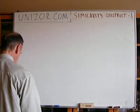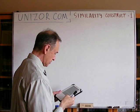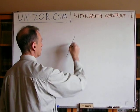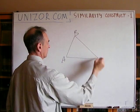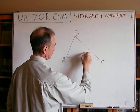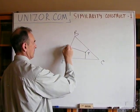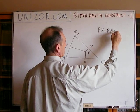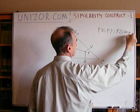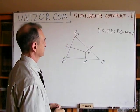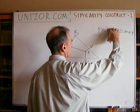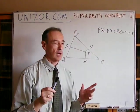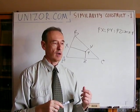Next problem: find a point inside a given triangle such that its distances from the three sides of the triangle have a given ratio. So you need to find a point inside the triangle such that, if you draw perpendiculars to all three sides, those perpendiculars relate as three known numbers.